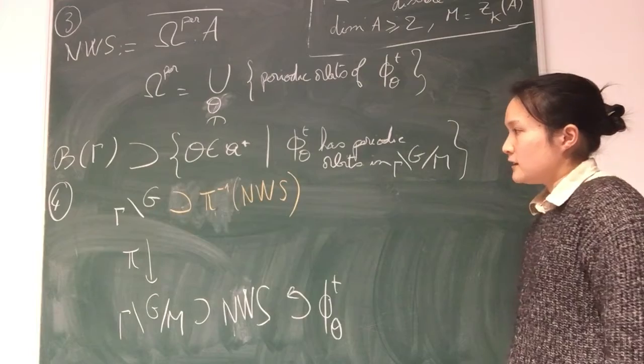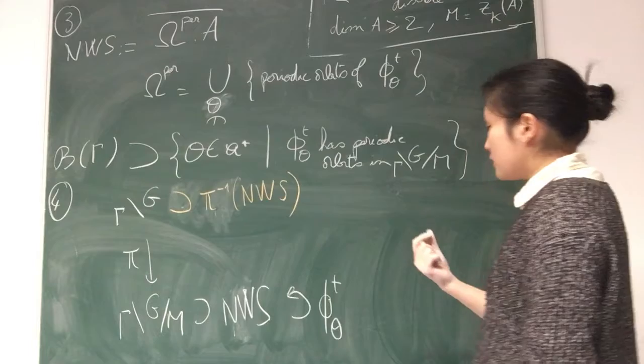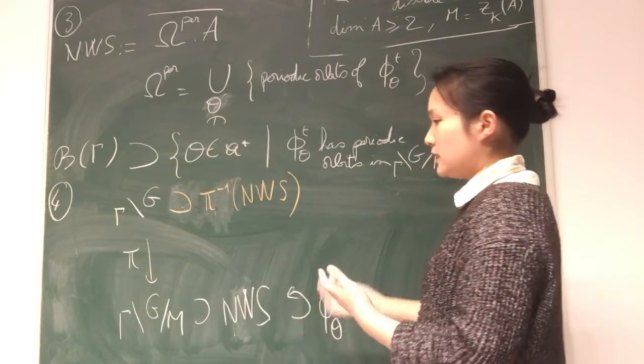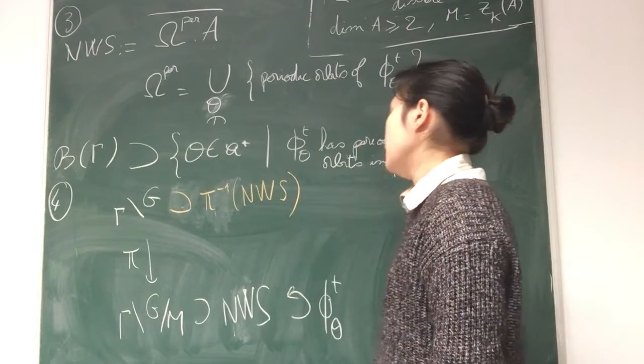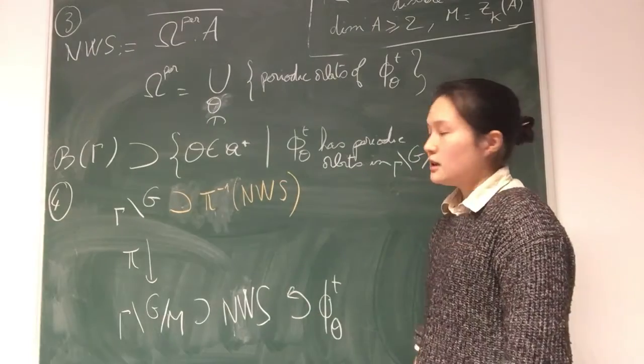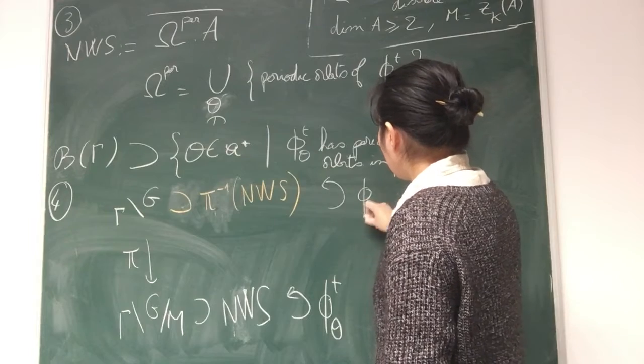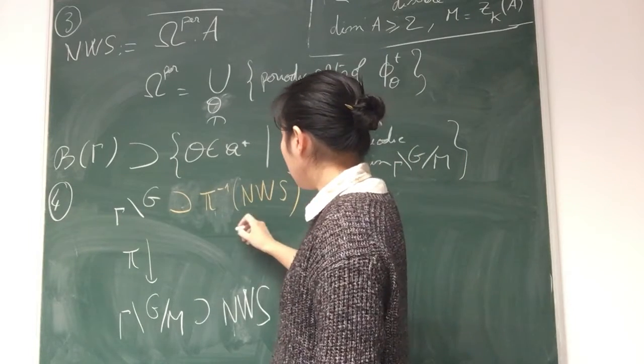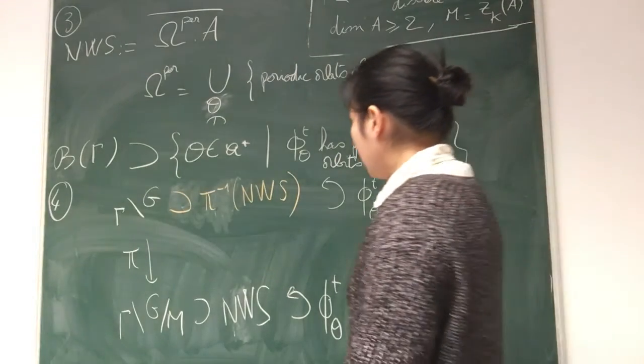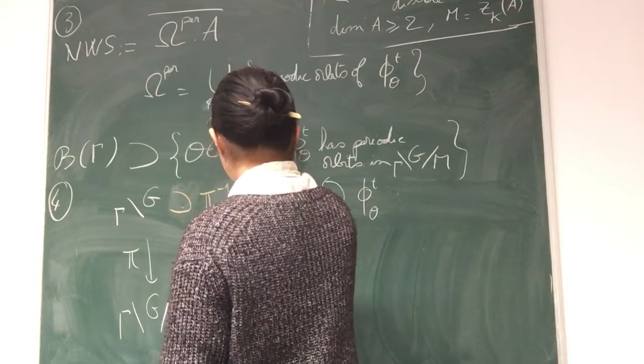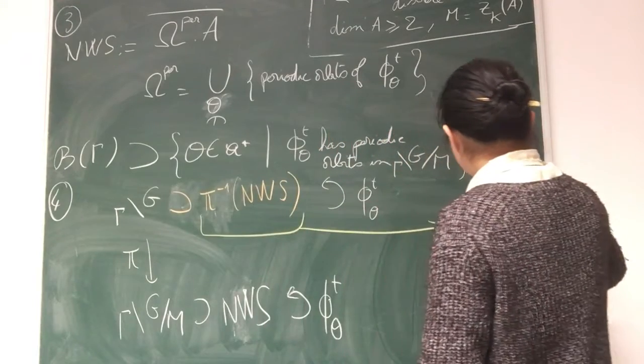Now let me look at the full pre-image of this normal set. In the SO(n,1) case I remarked that M was connected. So in the end, we can guess that when M is connected this is going to be a very good candidate for my non-wandering set. So let me say that M is connected.